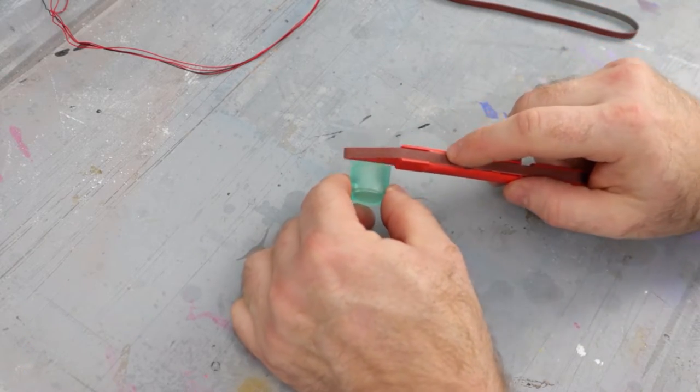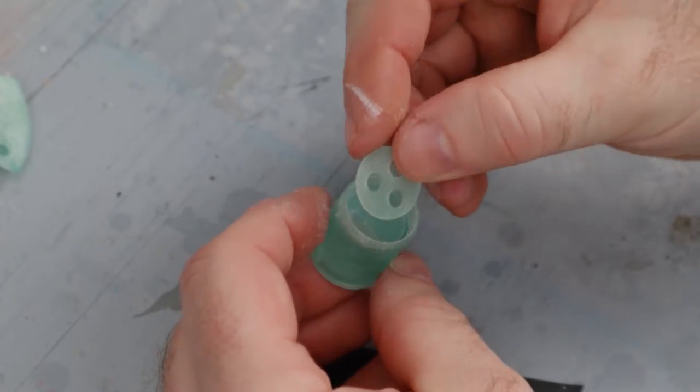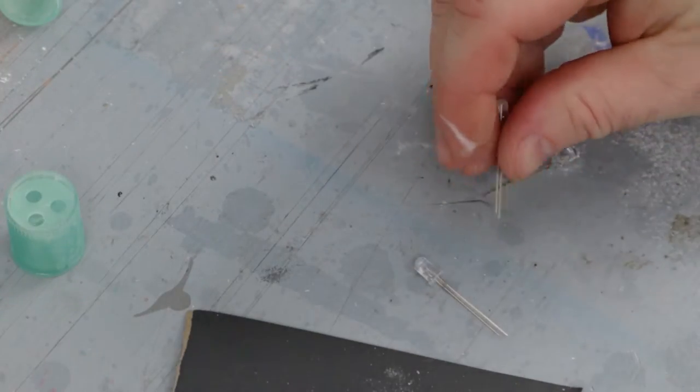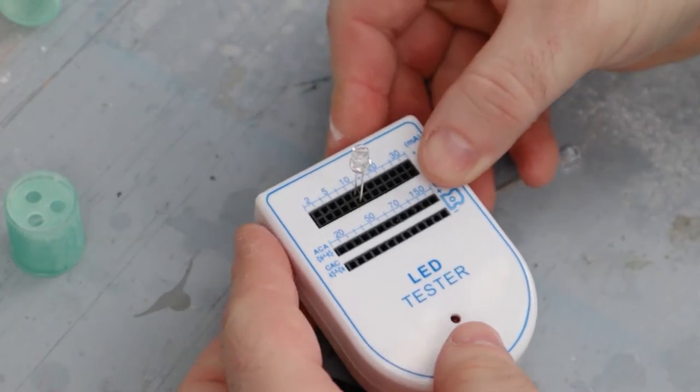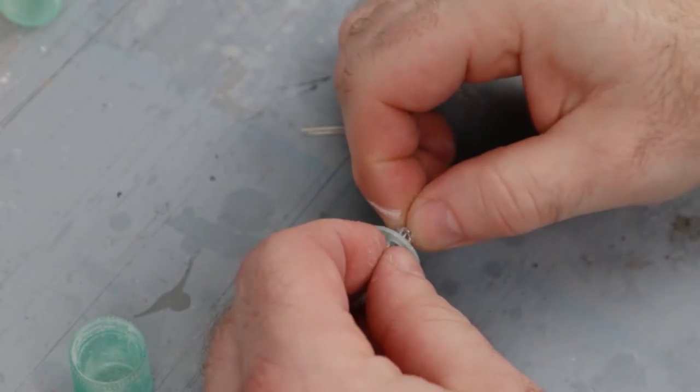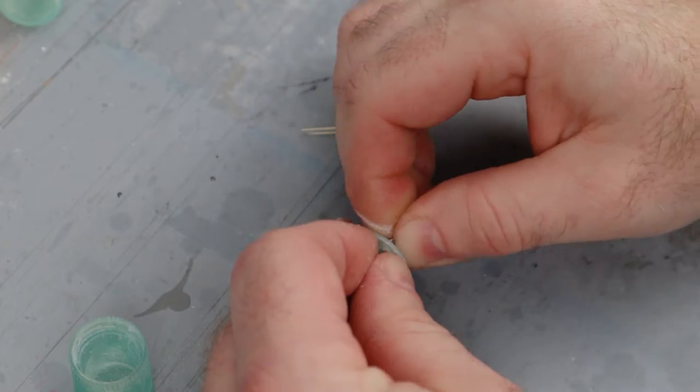Once everything's patched, it's on to sanding. This is how the LED holder fits in. The LEDs I'm using look clear, but they're actually green when you apply power to them. They fit into the holder with a little bit of pressure.